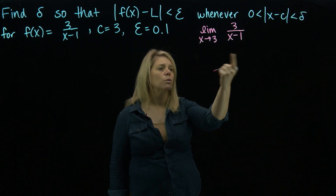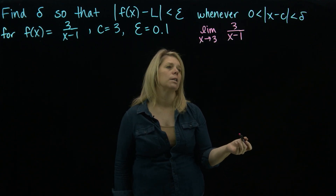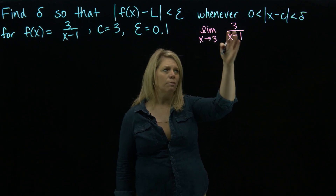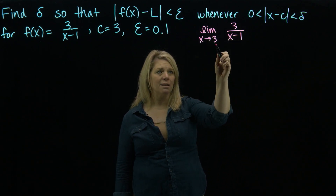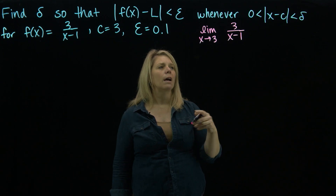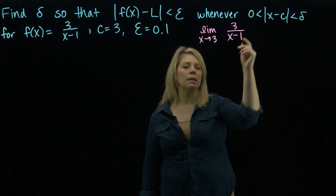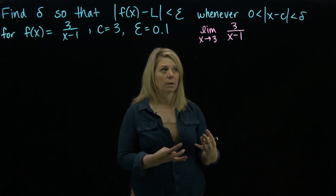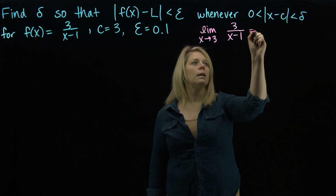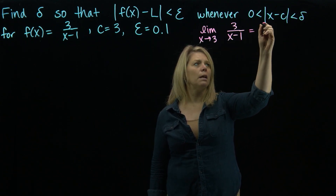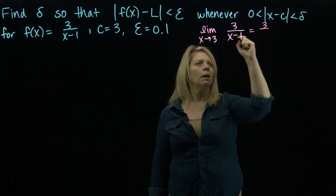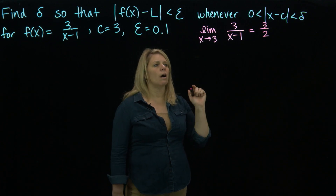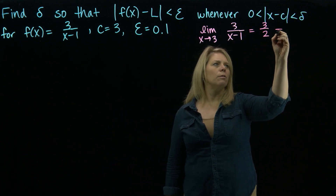We can use the substitution shortcut theorem for rational functions to find this limit, since the denominator is not 0 at x=3. So the limit is 3/(3−1) = 3/2, or 1.5. This is our L value.